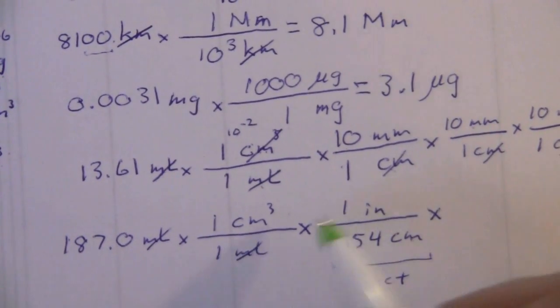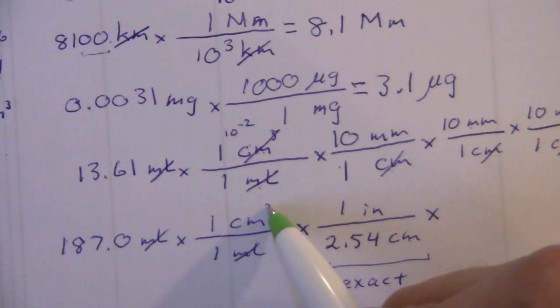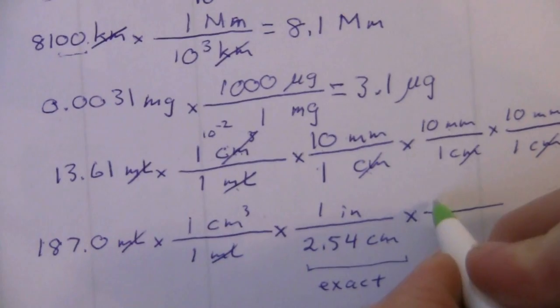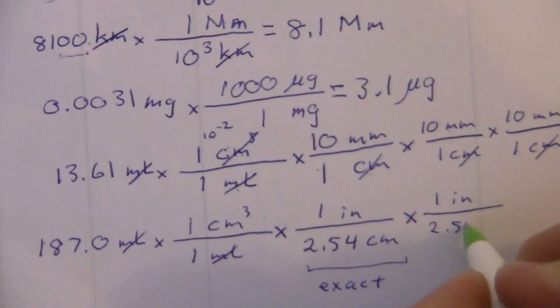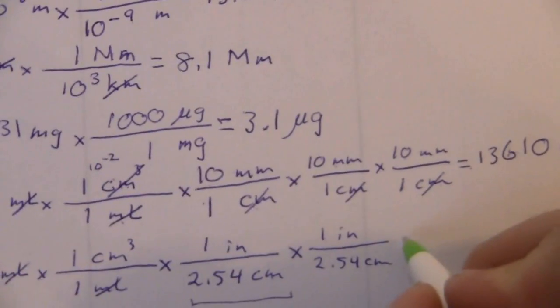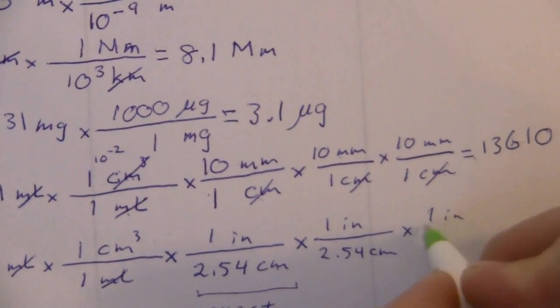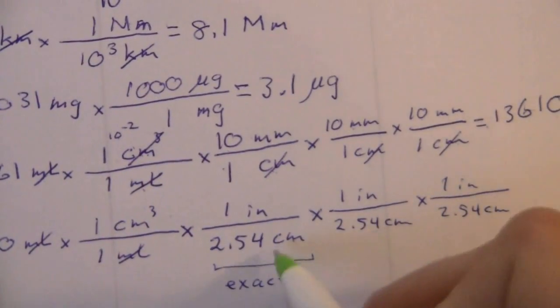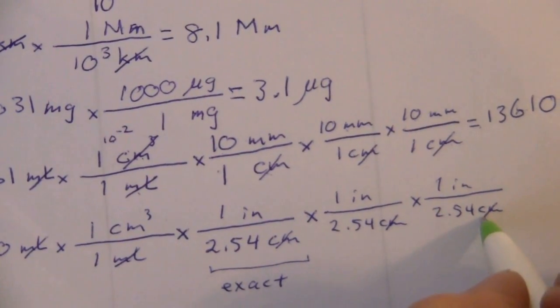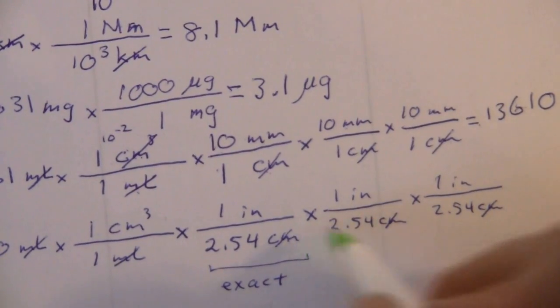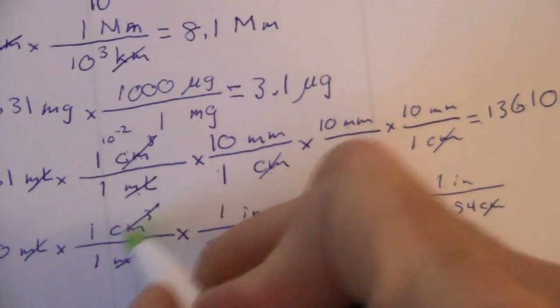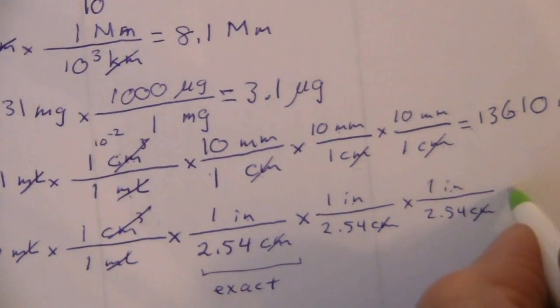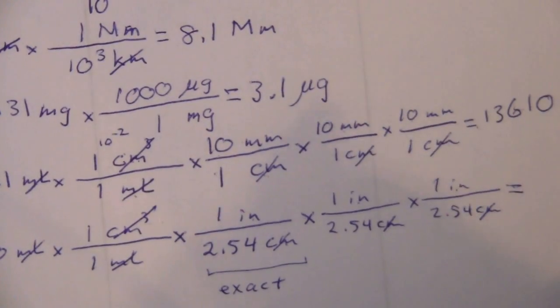We have centimeters cubed. Just like before, we need to put this in there three times. Now we have centimeters times centimeters times centimeters. All together, those are centimeters cubed, that cancels here, and we're left with inches times inches times inches, which is inches cubed, which is what we want.